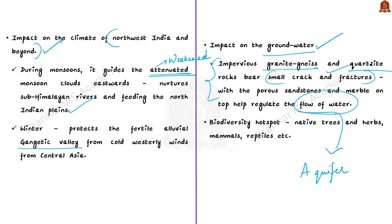Besides all these features, the Aravalli mountain range is also a biodiversity hotspot with native trees, herbs, mammals, reptiles, etc. Because of all these importances, environmentalists and residents are highly opposing the idea of mining the Aravallis — if mining continues, it will not only affect the resources but also the climate, pollute groundwater, and affect the biodiversity of the Aravallis. This issue will be in the news for a long time until any decision is made.